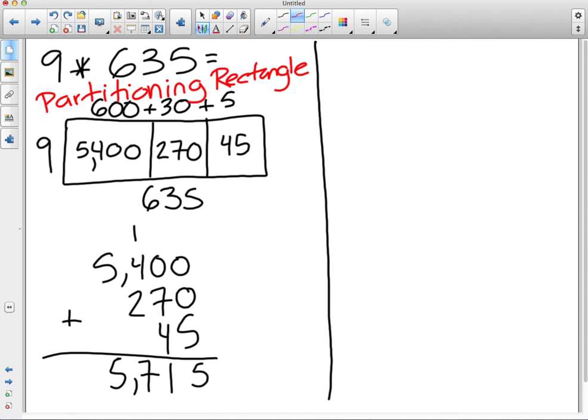Who can help us with partial products? Chase. Okay. So first you write 635 times 9. Do we write it horizontal like we see here? No. Vertically. I'm going to move this over just a bit.